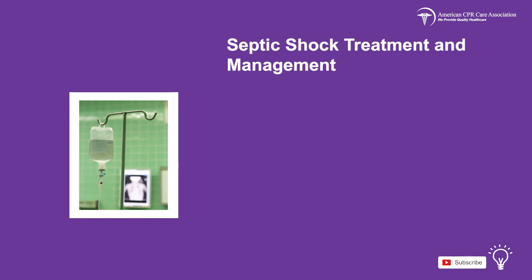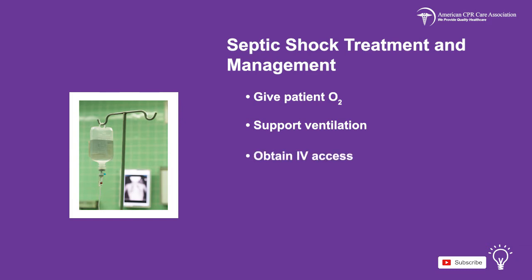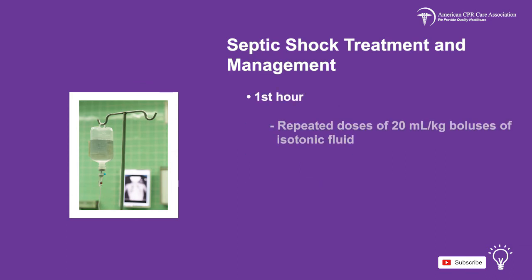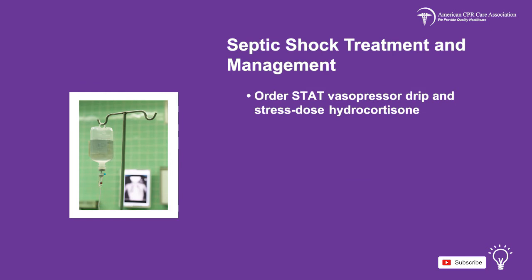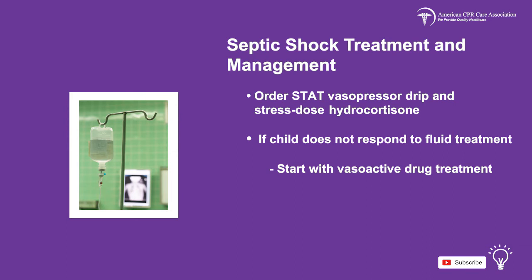It is critical to the child's health and recovery to follow the proper steps if they go into septic shock. Give the patient oxygen and support ventilation. Obtain vascular access and get lab tests and blood work. Administer repeated doses of 20 mL per kg boluses of isotonic fluid. Check and correct hypoglycemia and hypocalcemia, then give the first dose of antibiotics. Order a STAT vasopressor drip and stress dose hydrocortisone.